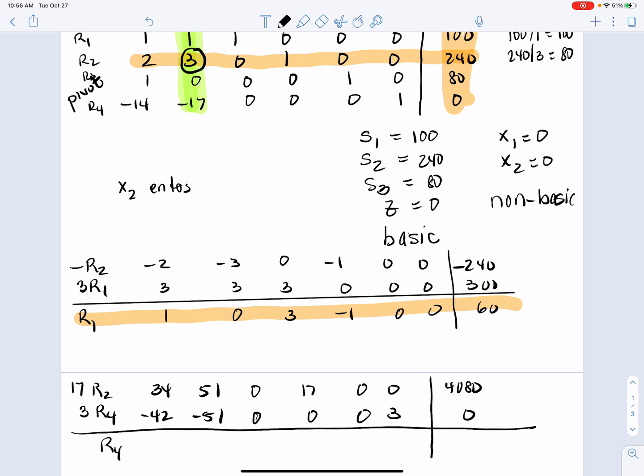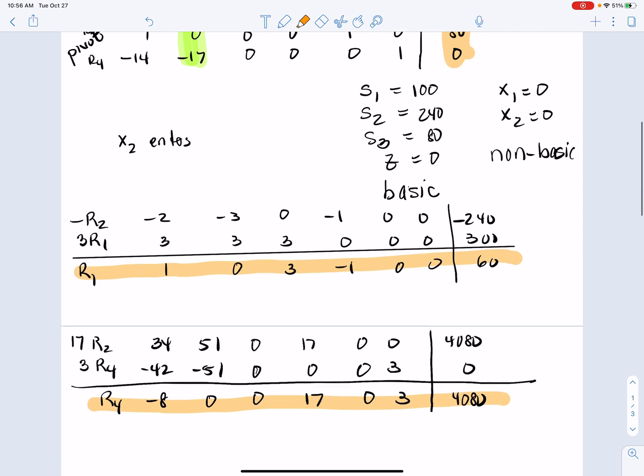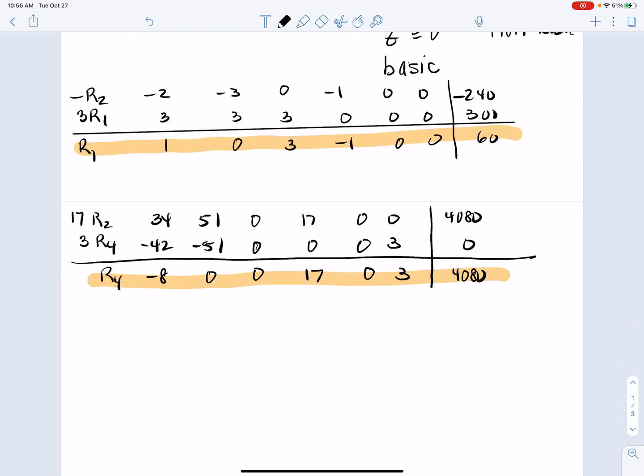So then my new r4 looks like it's going to be, let's see there, negative 8, 0, 0, 17, 0, 3, and 4,080. So that's my new r4. We have successfully gone through one iteration of the simplex method. So now let's write our new table.